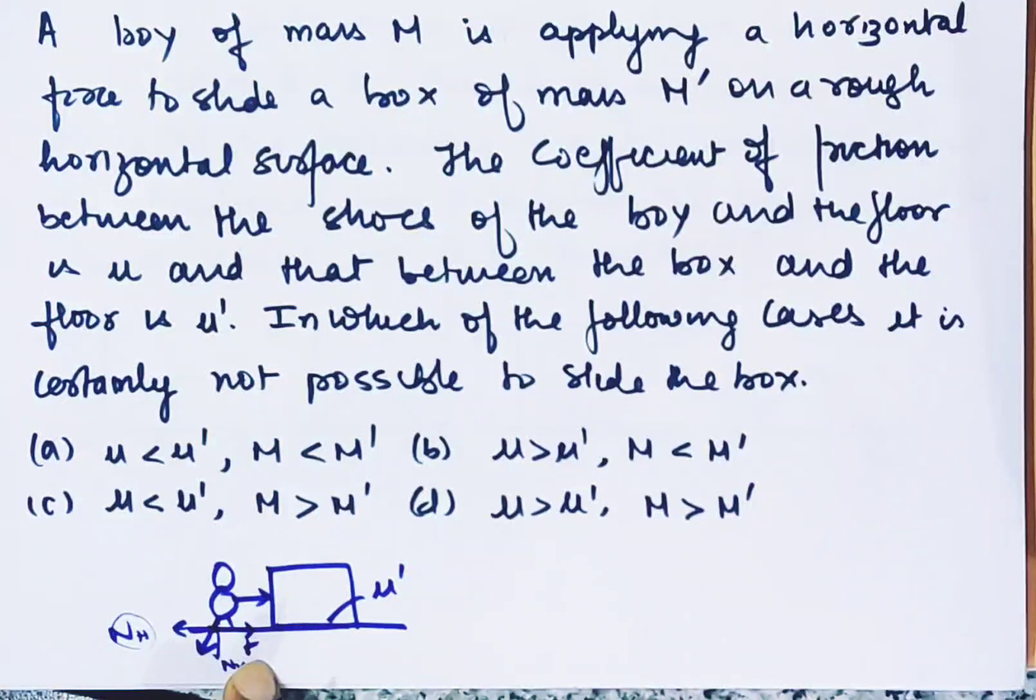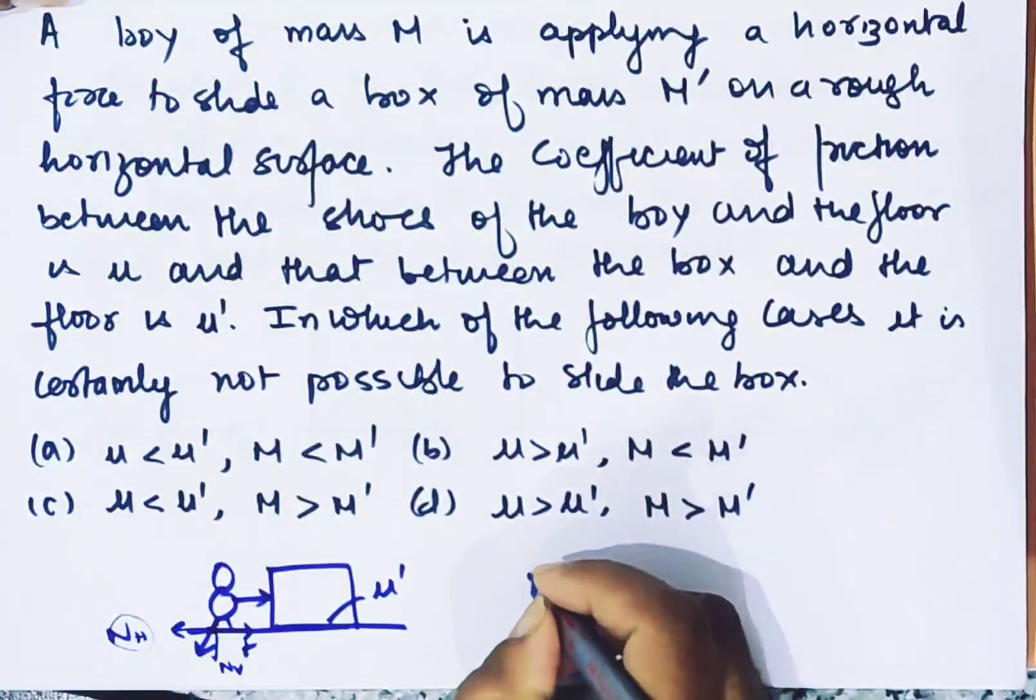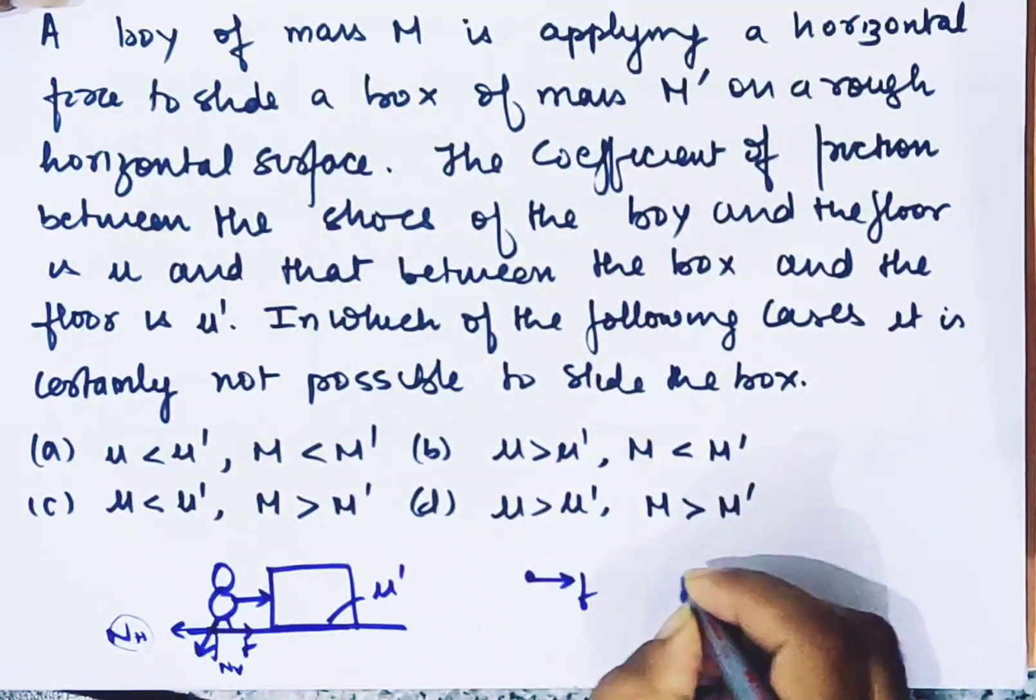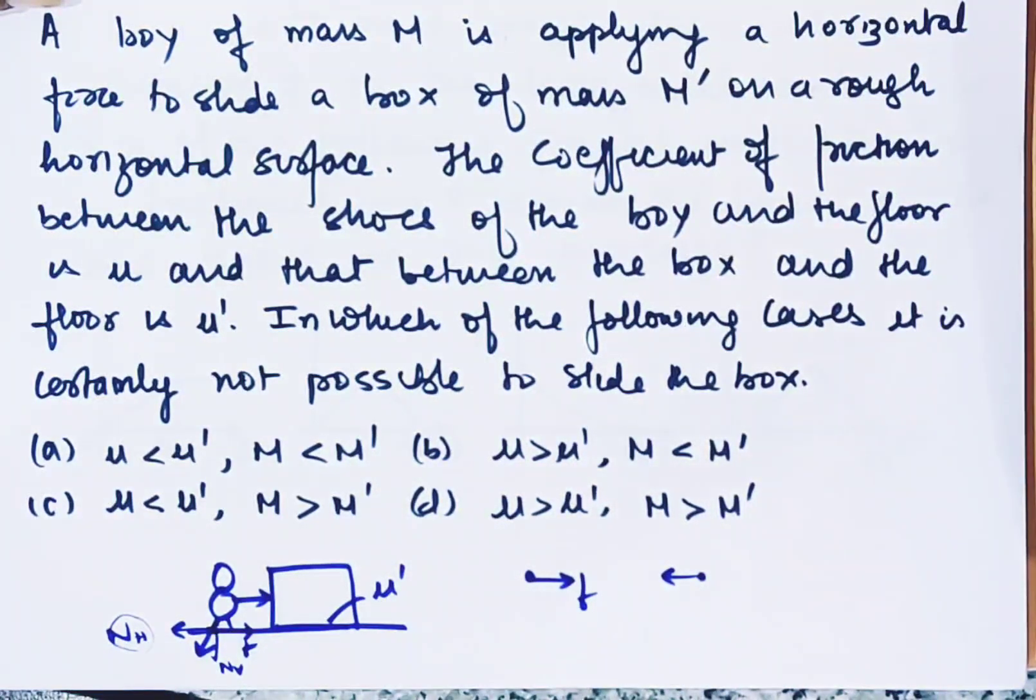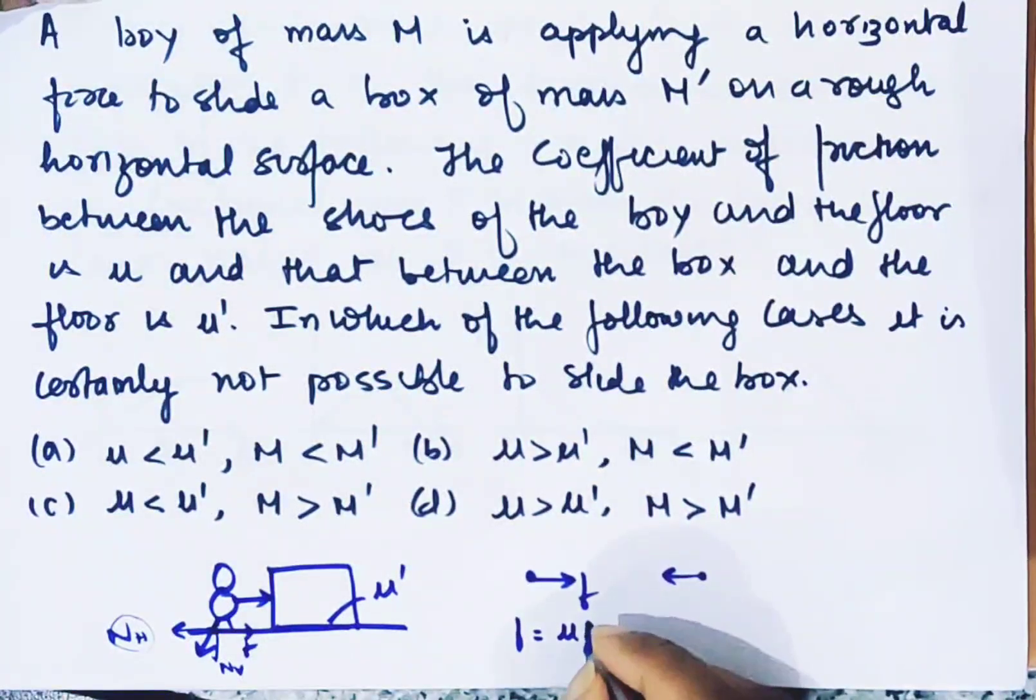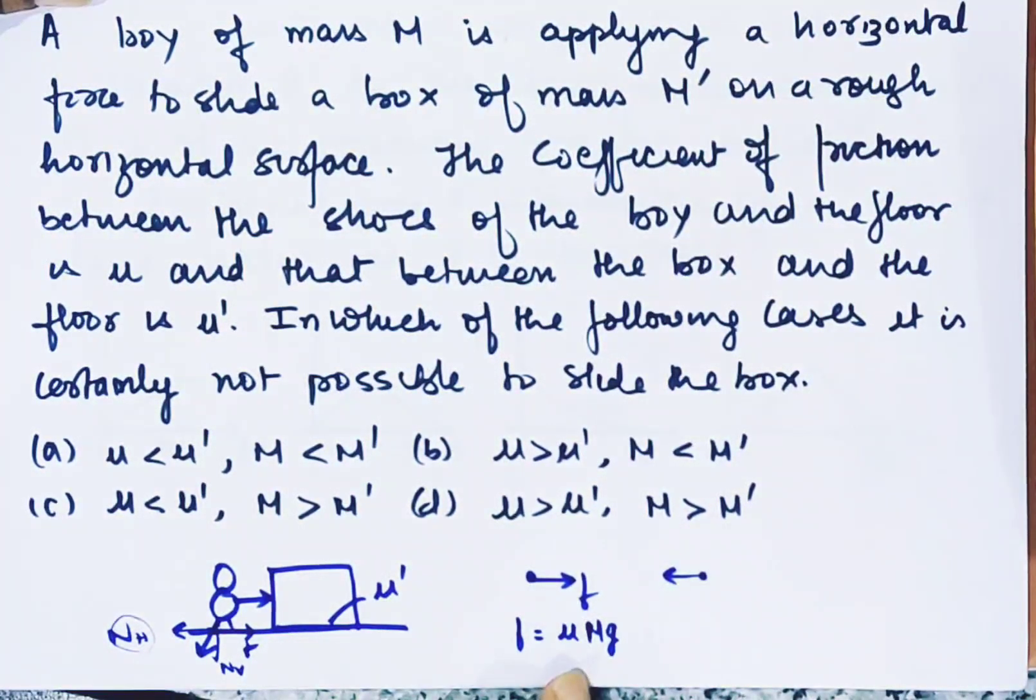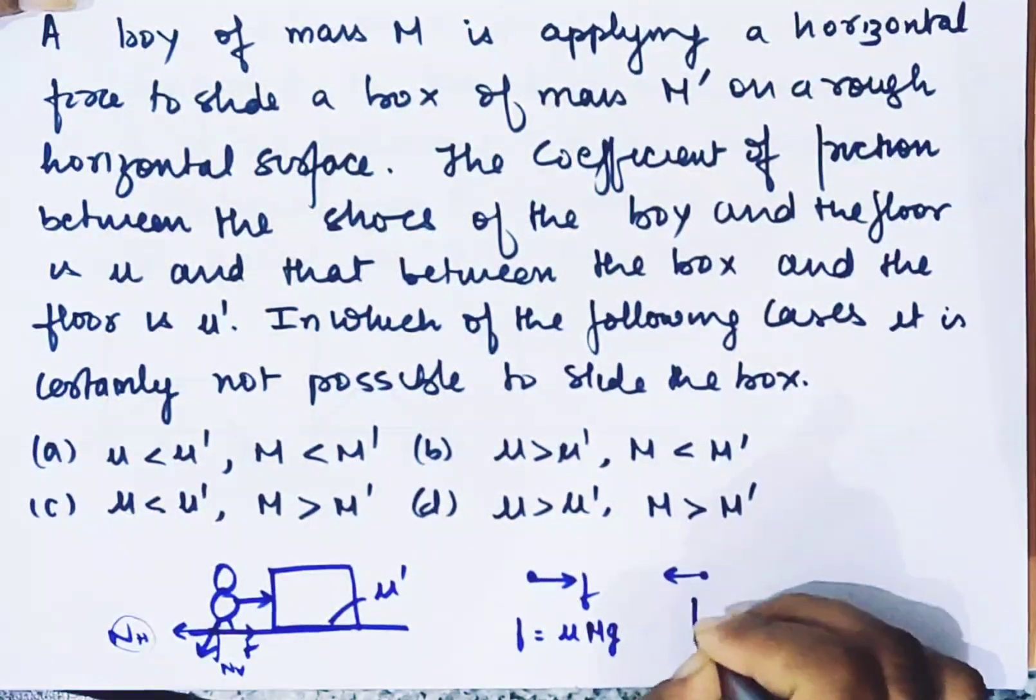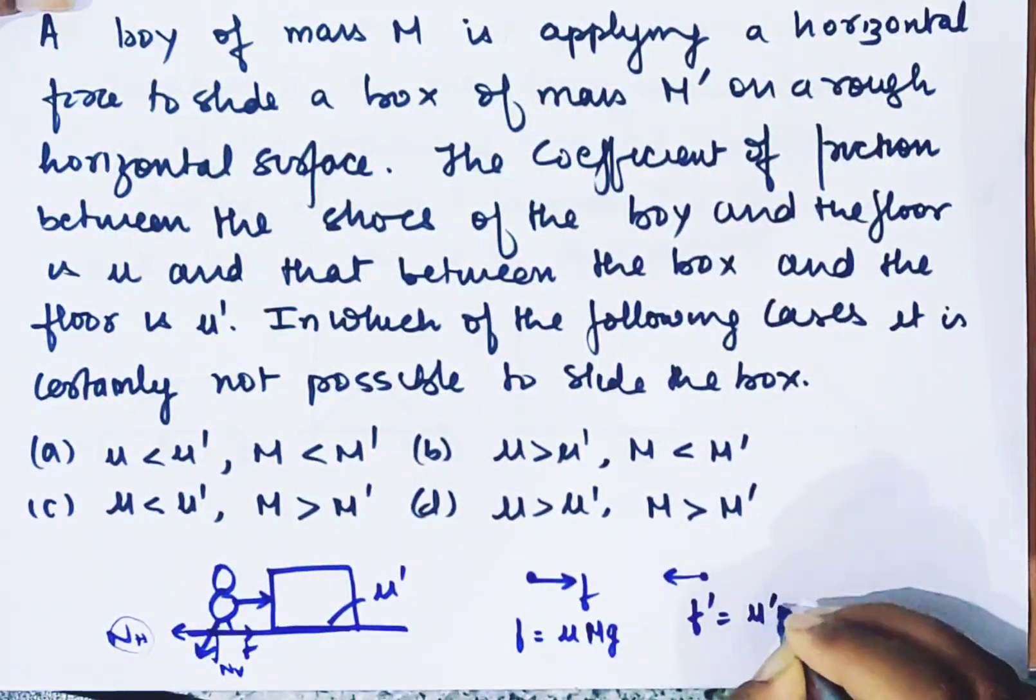The friction force acts to oppose motion. The maximum friction on the boy is μmg. For the box, the friction is μ'm'g.